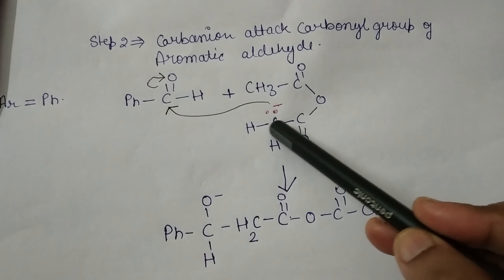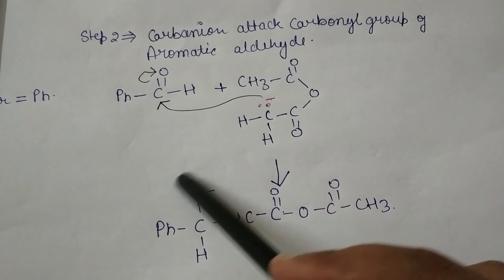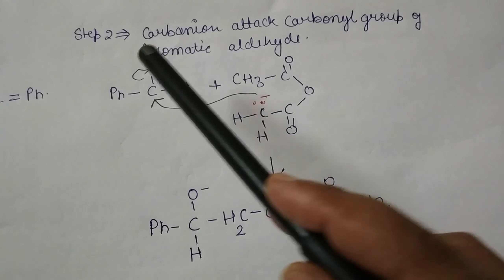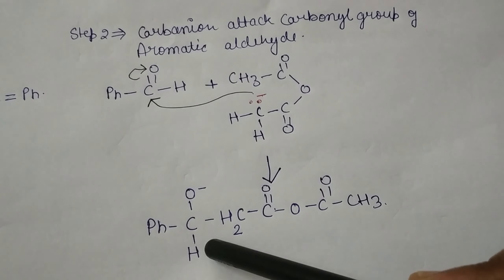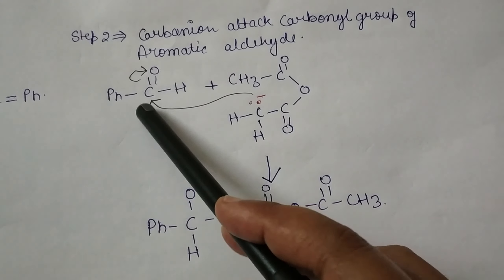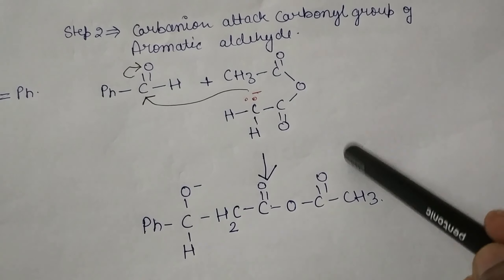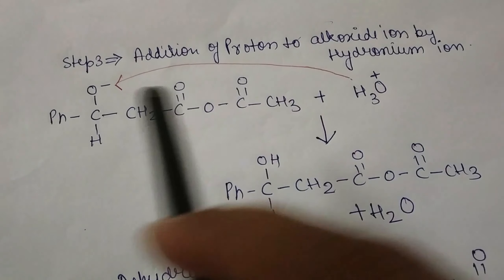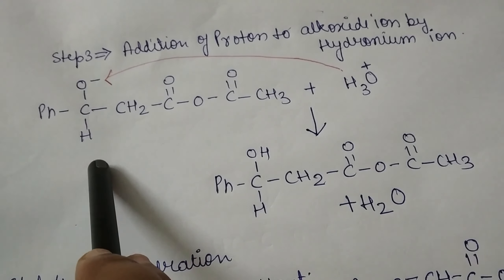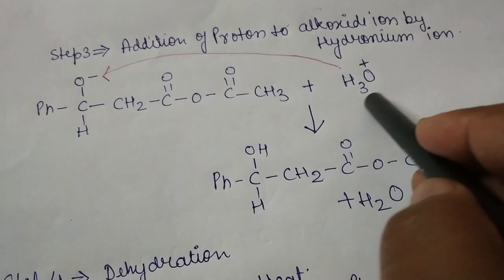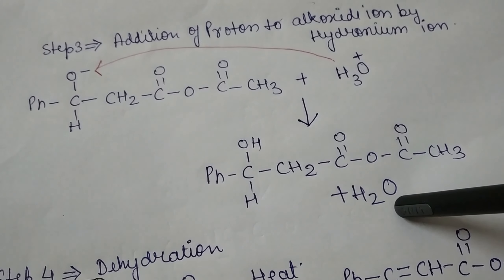In the second step, the carbanion formed in the previous step attacks another molecule of aromatic aldehyde. The Ph group represents the phenyl or benzene structure. The carbon with negative charge forms a bond with the carbonyl carbon of the aromatic aldehyde, and the double bond between carbon and oxygen breaks, causing oxygen to acquire a negative charge. The hydrogen shifts position, and the CH₂ group forms a bond with the carbonyl carbon, producing the intermediate structure: Ph-CH(O⁻)-CH₂-CO-O-CO-CH₃.